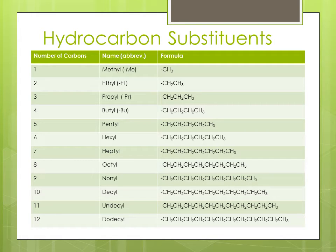Hydrocarbon substituents derive their names from the number of carbons present. One carbon indicates the name methyl, 2-ethyl, 3-propyl, 4-butyl, and so on.